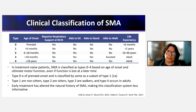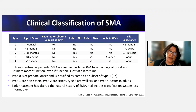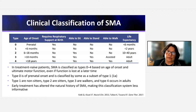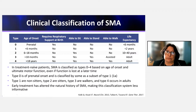The classification is based on ultimate function and age of presentation, divided into five groups. Type 0 has prenatal onset with connatal symptoms; these infants are very severe, require respiratory and nutritional support, and have a very short life expectancy — without intervention, survival typically does not surpass six months.